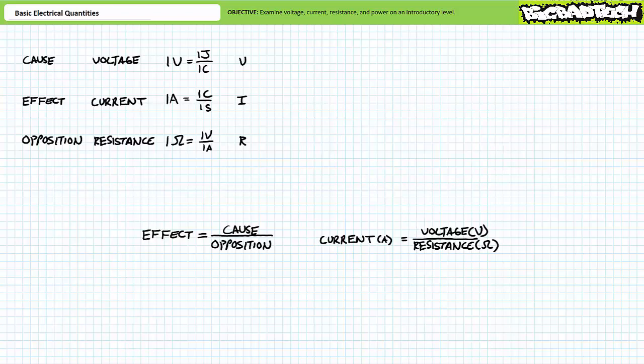Other observations are equally as valid. If cause was held constant and opposition increased, effects should decrease. Stated another way, same voltage, more resistance yields less current.